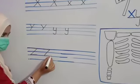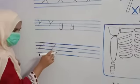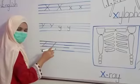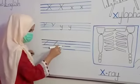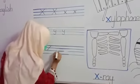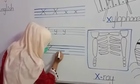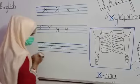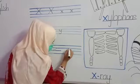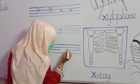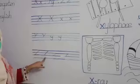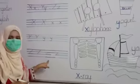This is letter Z. Make a sleep line in the first line, then from line one to line three make a slant line, then another sleep line in line three. For the small z sound, do the same in the middle two lines: sleep line on line two, slant line, then sleep line. Letter Z, sound Zz.